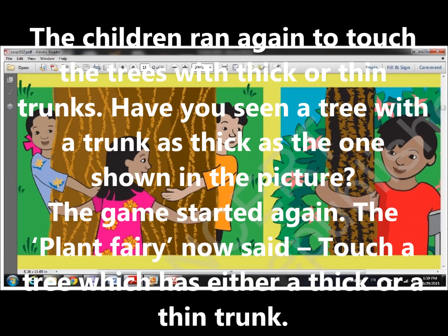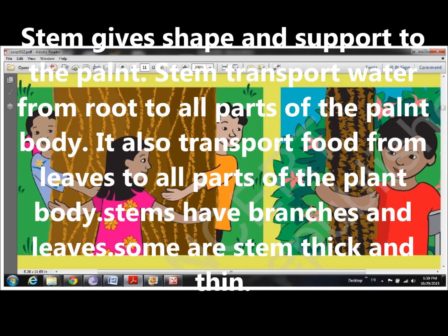The children ran again to touch trees with thick or thin trunks. They noticed that all plants do not have equal stems — they have different types of stems: some are strong, some are thick, and some are thin. The plant fairy said touch a tree which has either a thick or a thin trunk. The children started touching the stems and came to know that stems give shape and support to the plant. Stems transport water from root to all parts of the plant body, and also transport food from leaf to all parts of the plant body. Stems have branches and leaves.